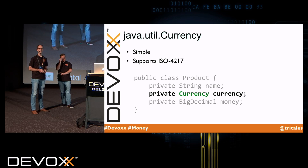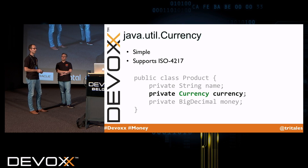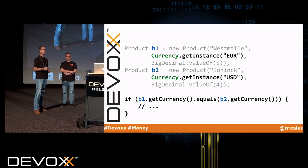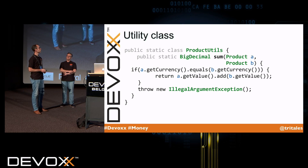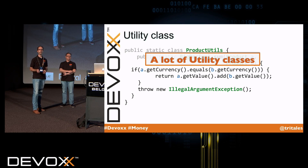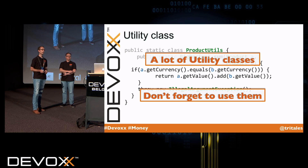So a more advanced approach is to use the Java Currency class, which is available in the JDK. It's actually quite simple — it supports the ISO 4217 standard. So we use it in our product design, and we can instantiate it by using the static getInstance method of the Currency class and provide it with the three-character currency code. But still a few things are missing, because we also need operations like addition, subtraction, etc. We can use utility classes for this, but we have to take into account that the currencies might be different, so we have to do some validation. And we end up with a lot of utility classes that we should not forget to use.